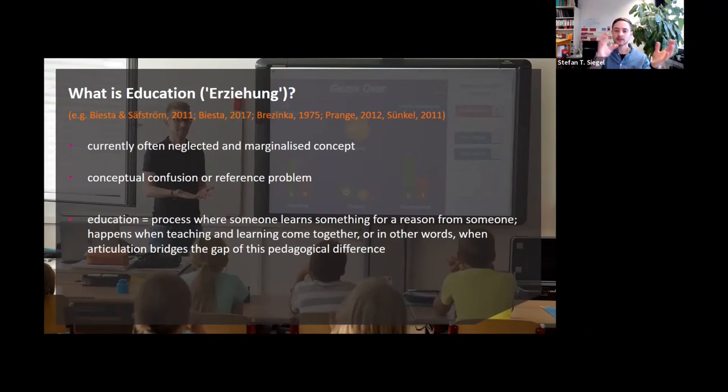Probably most educationalists think that education is a process where someone learns something for a reason from someone. Education requires, accordingly, a pedagogical relationship where a teacher says, 'look, there is something there I believe might be good, important, worthwhile for you to pay attention to.' Several theories highlight that education happens when this gesture of showing, on the one hand, and learning comes together, when articulation bridges that gap between teaching and learning, also called the pedagogical difference. One important aspect of education is often forgotten: it is the technology deficit. There's a nice saying in the English language, which I currently found out: you can lead a horse to water, but you can't make it drink. I really like that. So all of that makes it hard to theorize education.